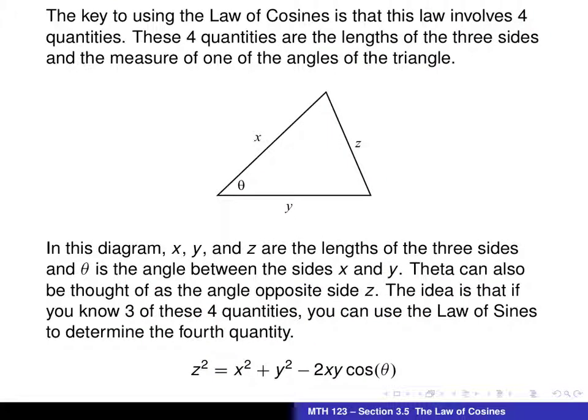Here's how I like to think about the law of cosines. And again, it's very similar to what we did with the law of sines. We got four quantities involved in this. Three of these are the lengths of the three sides. And within the law of cosines, there's one of the angles. We have the measure of that. And so that's kind of what I've set up in this diagram here.